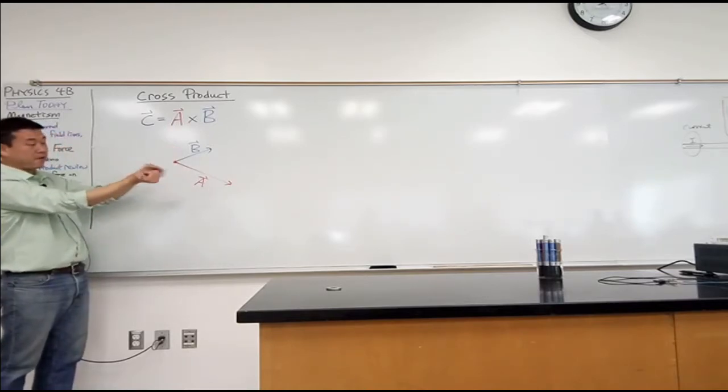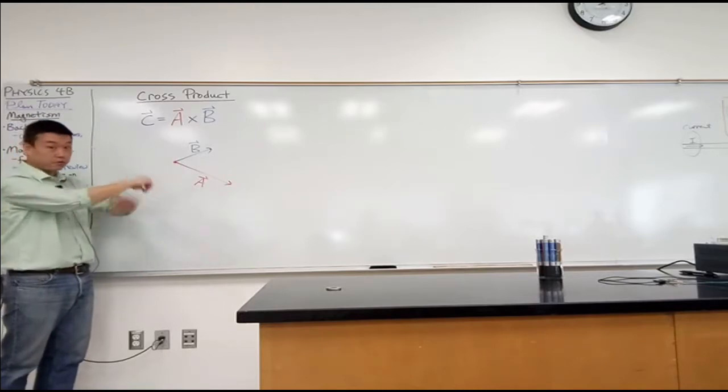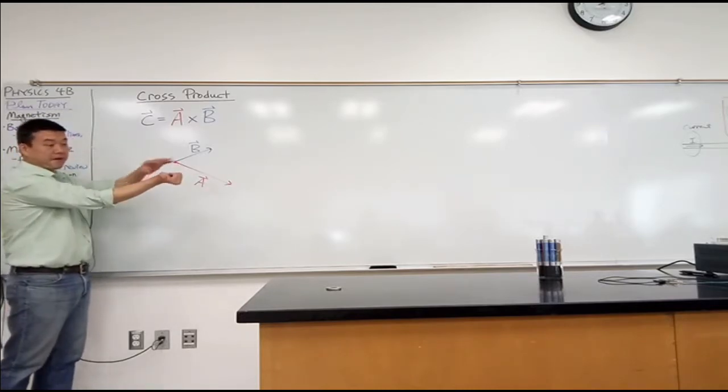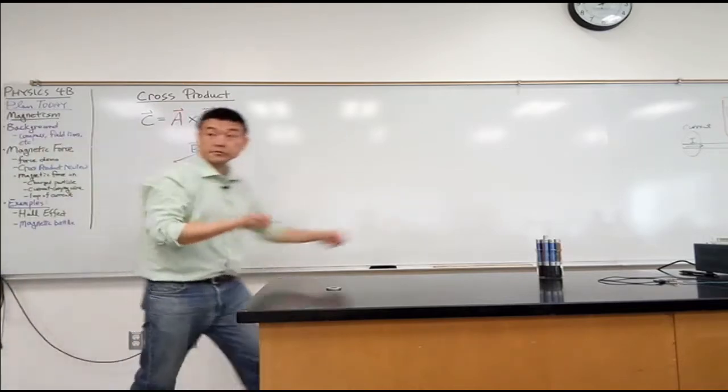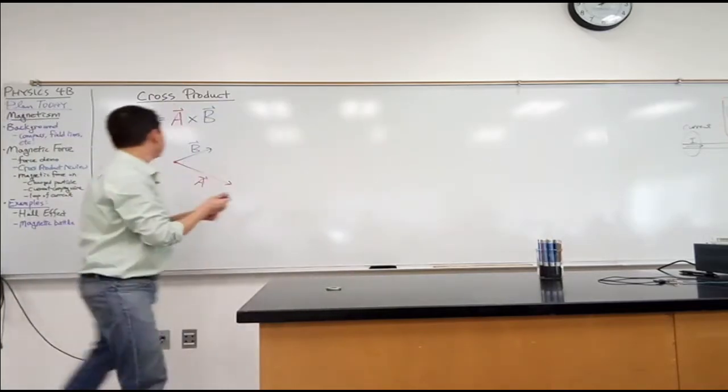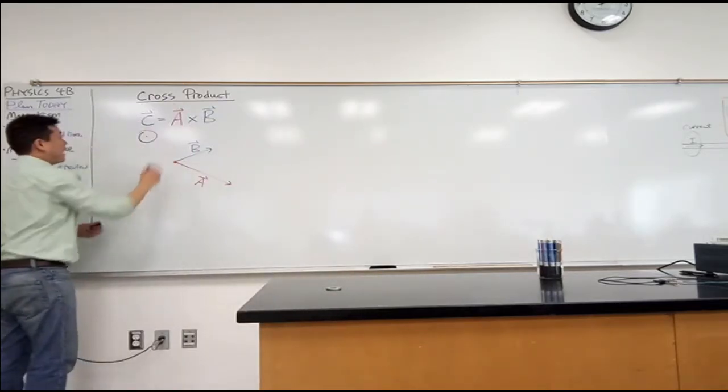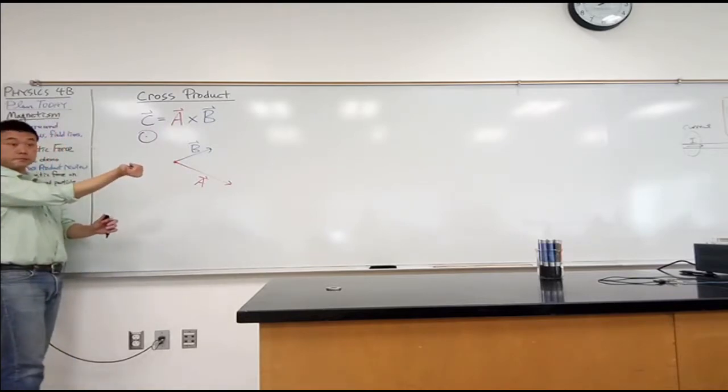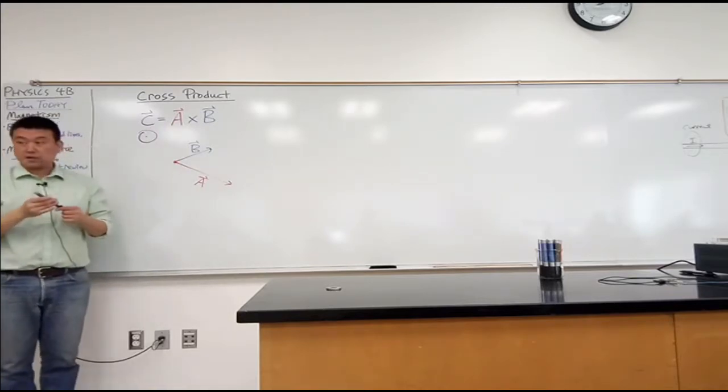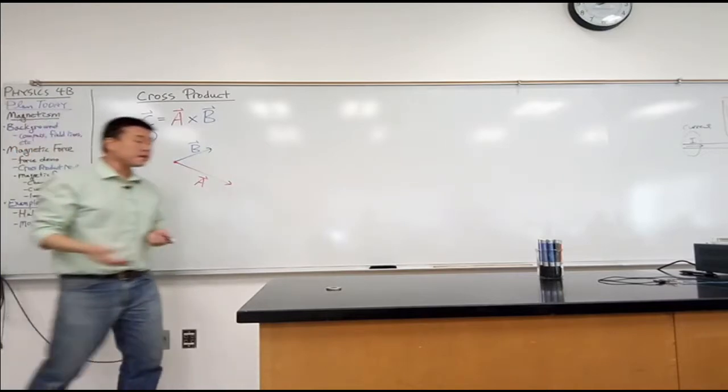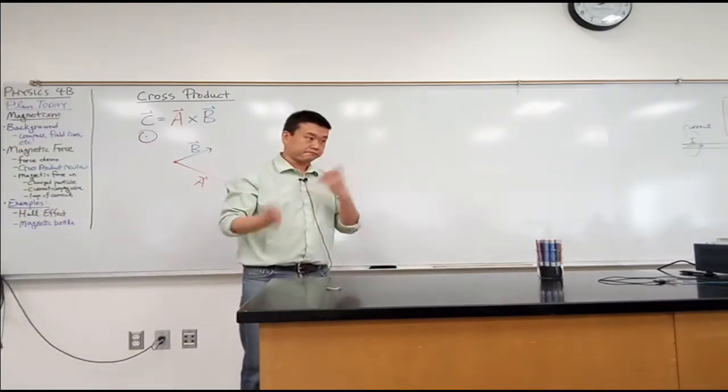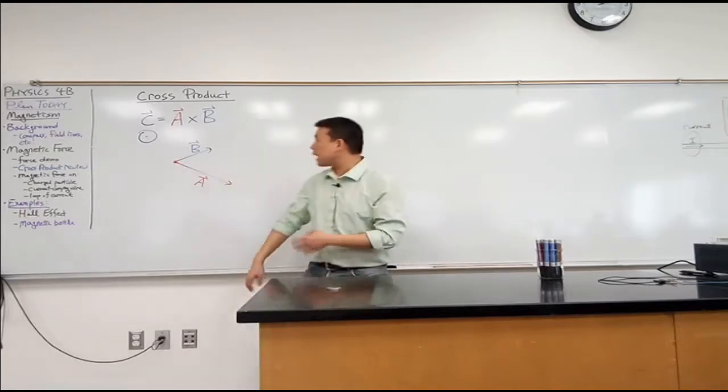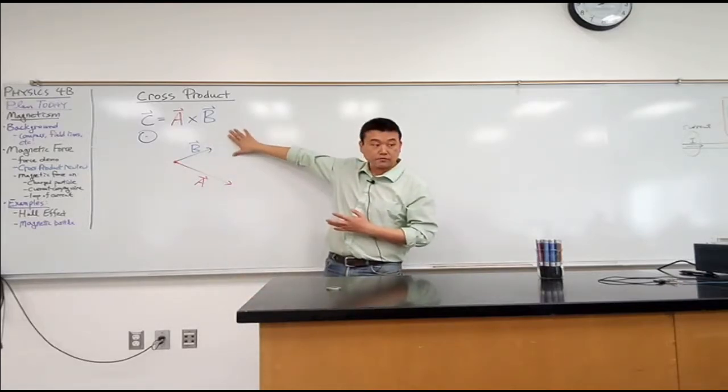So once I have my hand oriented correctly, my right hand oriented correctly, so that it's pointing in the direction of the first vector, and when I curl my fingers, my fingers bend in the direction of the second vector, then the direction of the thumb tells me the direction of A cross B. And here, what my direction of thumb tells me is that C must be coming out of the board. That's the basic right hand rule.